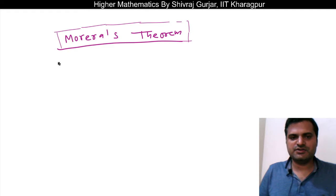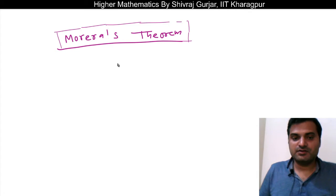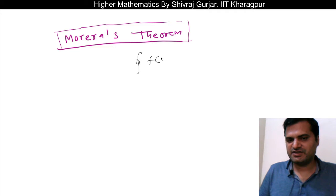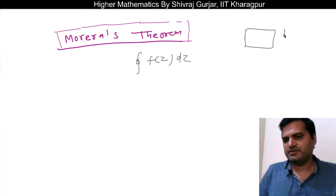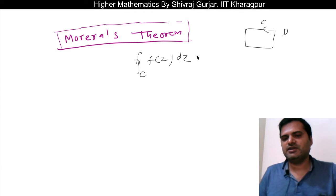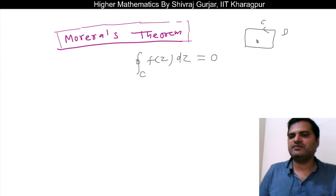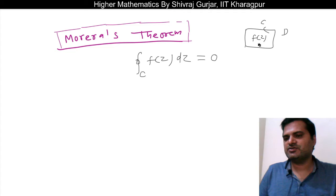Hello everyone, this is Sivaraj Guljar and we'll take up Morera's theorem next. First of all, we know that if some function f(z) is analytic in a given domain D whose boundary is C, if we integrate f(z) along C, then as per Cauchy's fundamental theorem, this will be zero if f(z) is analytic inside domain D and on the boundary also.